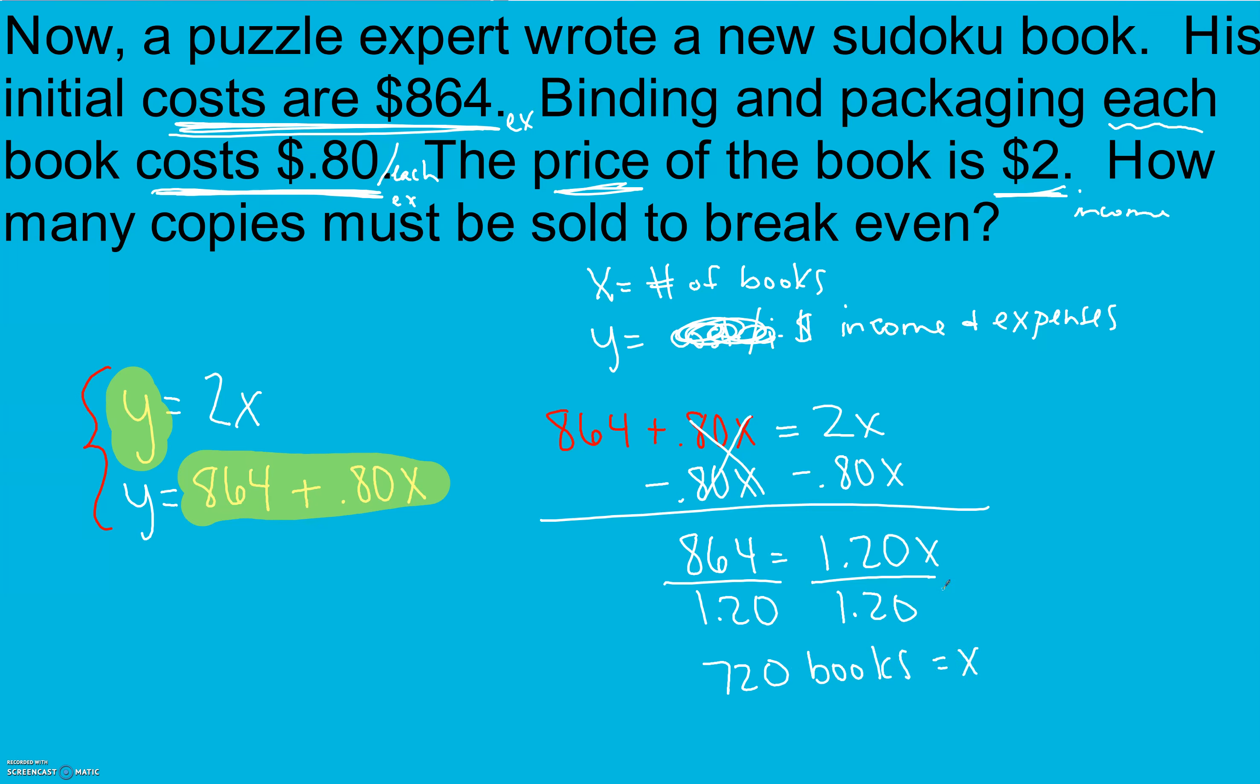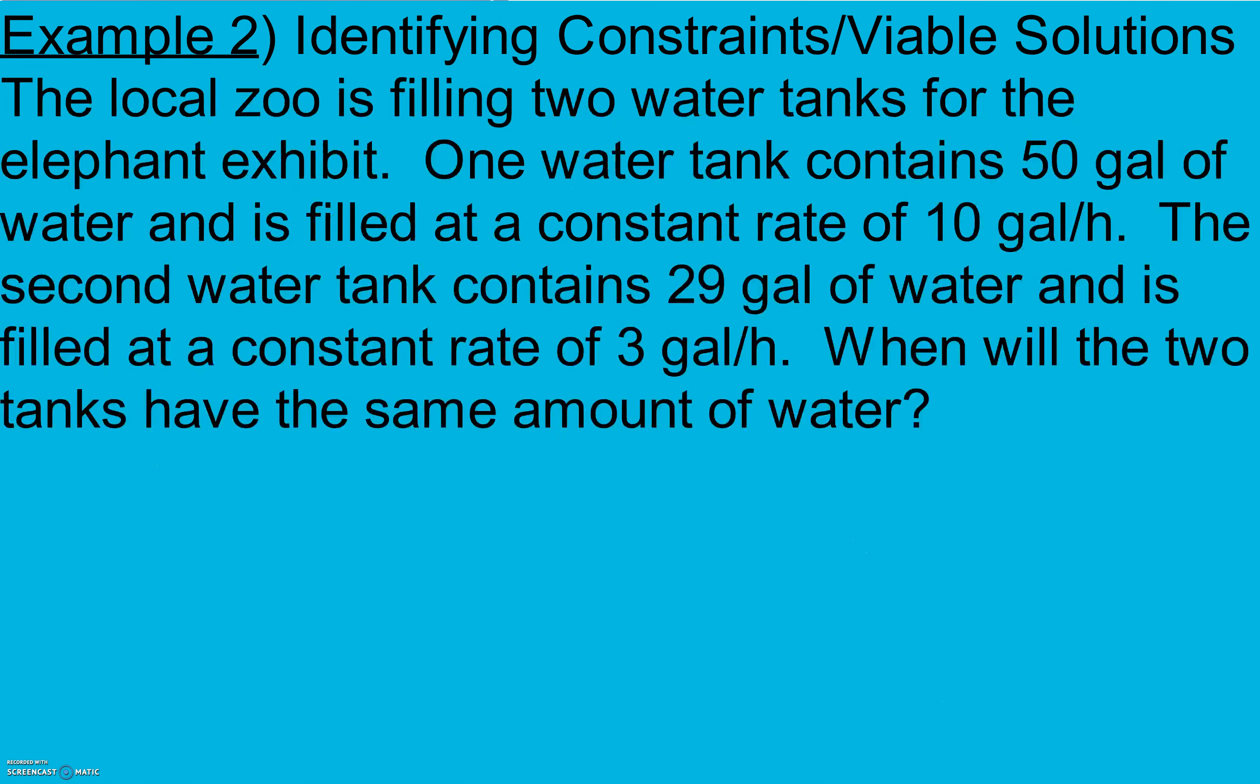And it says how many copies? And we're talking 720 copies. Again, if they wanted to know what is the break even point, what's the dollar amount, we would plug our books in times two and get 1,440.